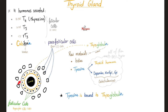Let's dig deeper into the thyroid. The thyroid has beautiful follicles, and these follicles are surrounding the lumen of the thyroid. The lumen contains colloid, which is basically a protein. Around those follicles you have parafollicular cells — cells that are parallel to the follicle.